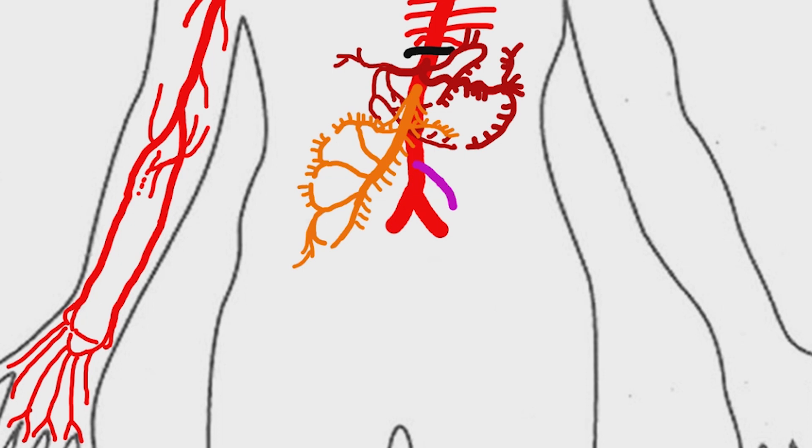It gives rise to left colic artery, sigmoid arteries, and continues as superior rectal artery. The median sacral artery is a small single posterior branch of the distal abdominal aorta.